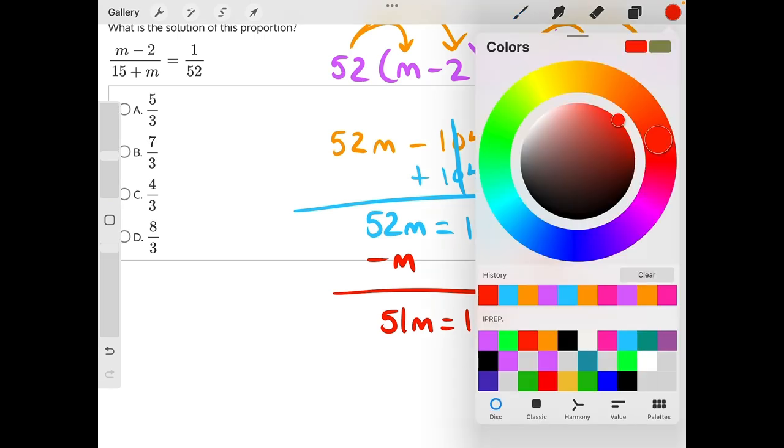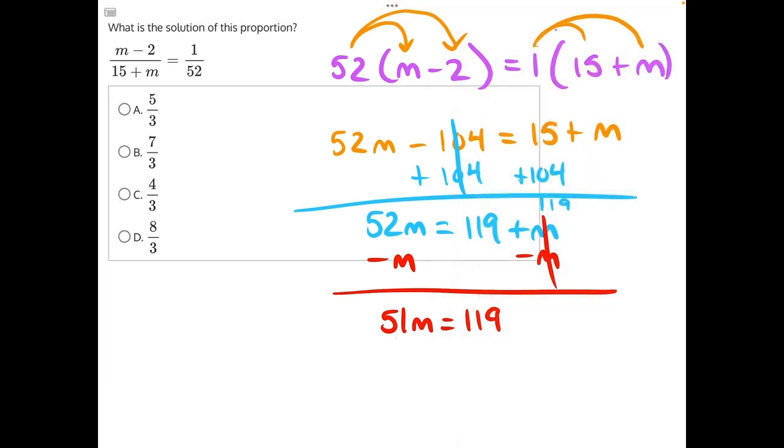And then our last step: 51 is being multiplied to m, so the opposite operation is dividing both sides by 51. These will cancel, leaving us with m is equal to 119 over 51.